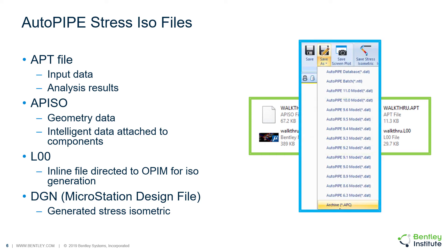When you need to share your model in Autopipe, you should create an archive file or APC file, which is accessed via the Save As command. This archive file collects all of the files needed to run the model and stress isometric files, and creates a single file to share instead of the large number of files that Autopipe uses.